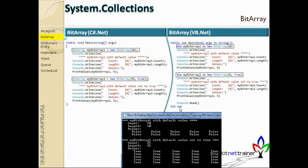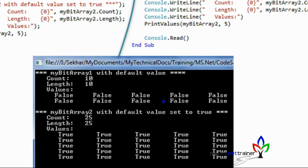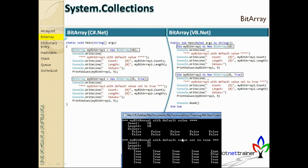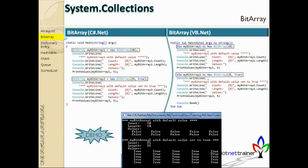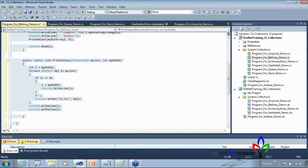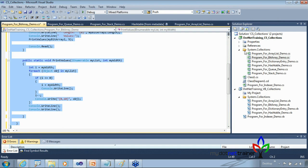The output is self-explanatory. In the first case, with 10 elements created with no explicit initialization, all values are false — that's the default value of a Boolean. In the second case, we explicitly initialized all values to true, so we see everything true. It's straightforward, so let's jump into a demo to see the code in action.